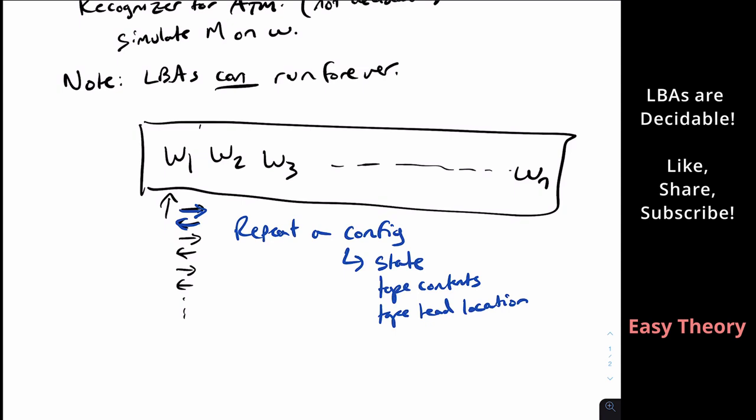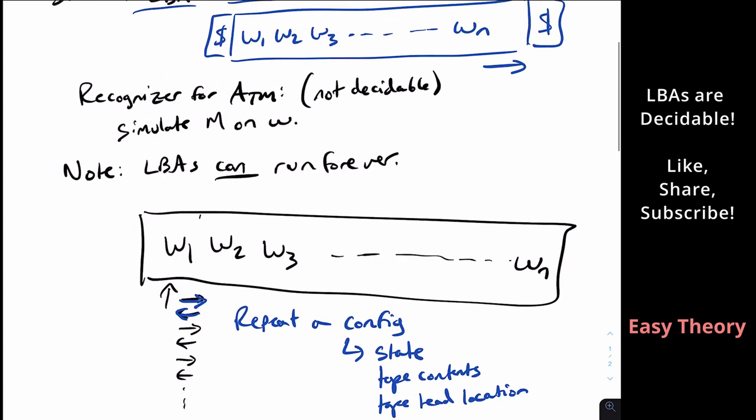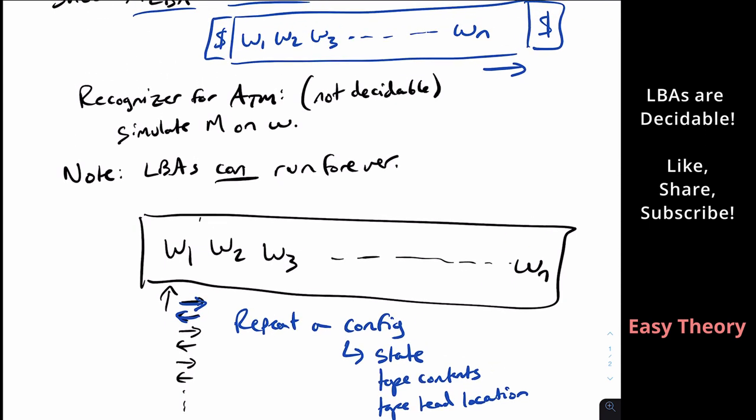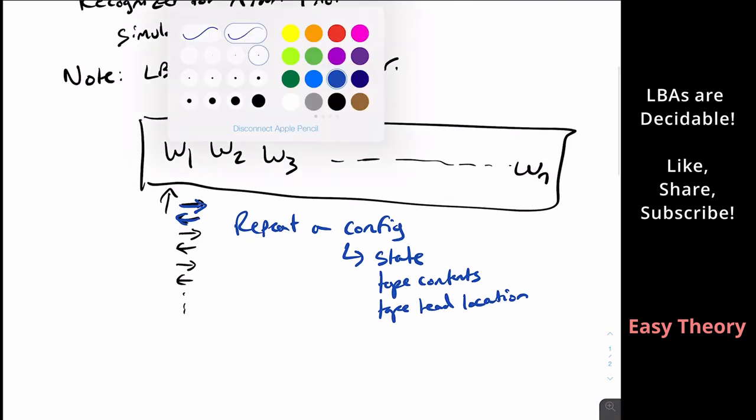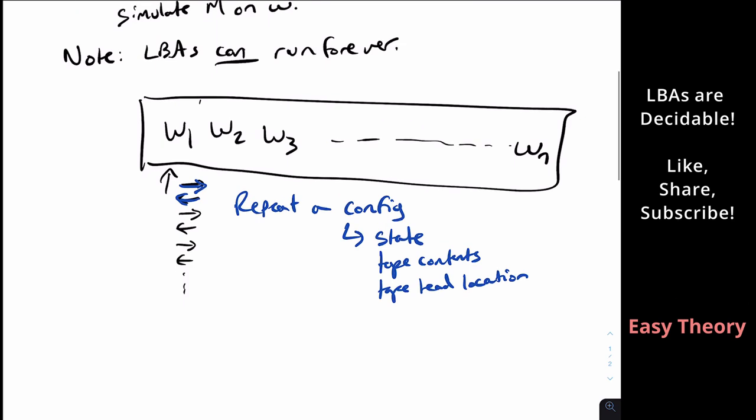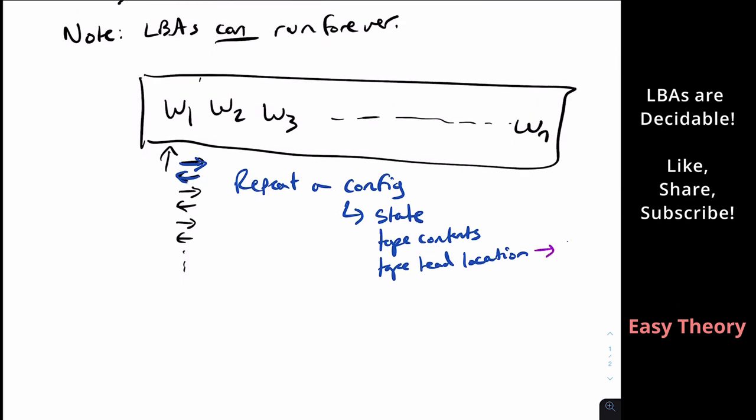And there aren't any more other than, I guess, the two ends, but that won't actually be a huge issue here. There are only essentially n positions here because we can't allocate additional space. So the number of possibilities for the tape head location is n, if the input's length is n.